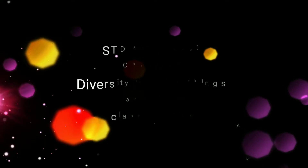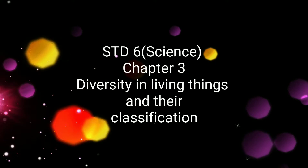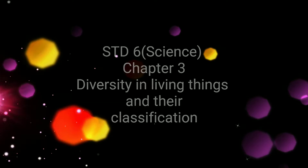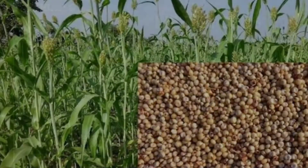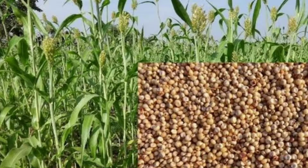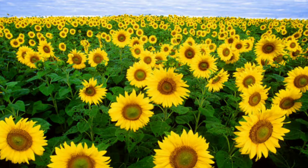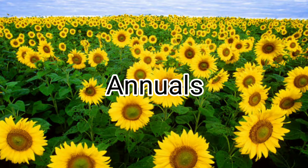General Science Standard 6, Chapter 3: Diversity in Living Things and Their Classification. Let us continue with the classification of plants. According to the period of their life cycle, plants are classified as annuals, biennials, and perennials. The life cycle of plants like Jowar and Sunflower is completed in one year. These plants are called annuals.